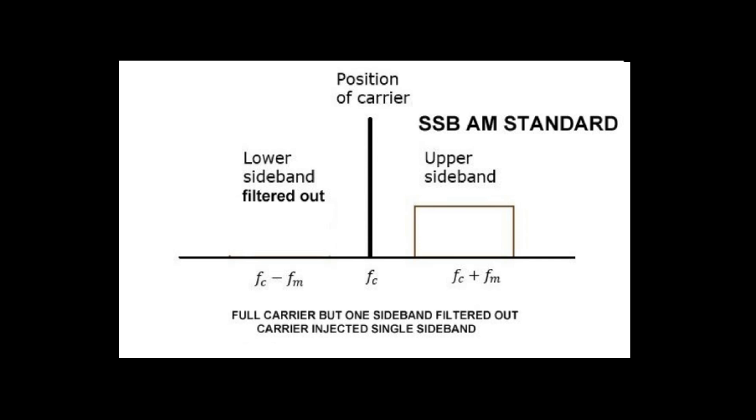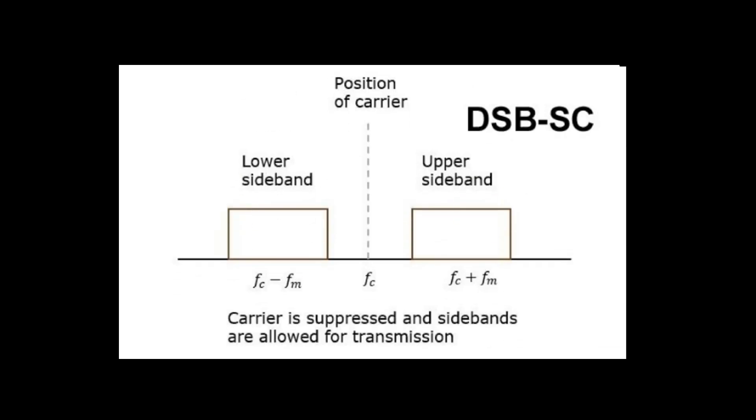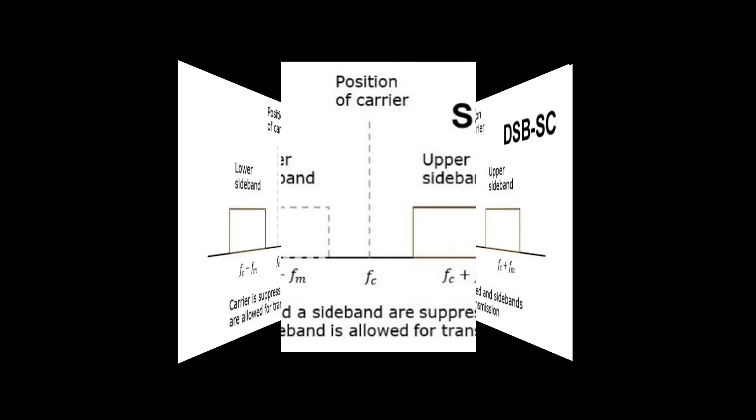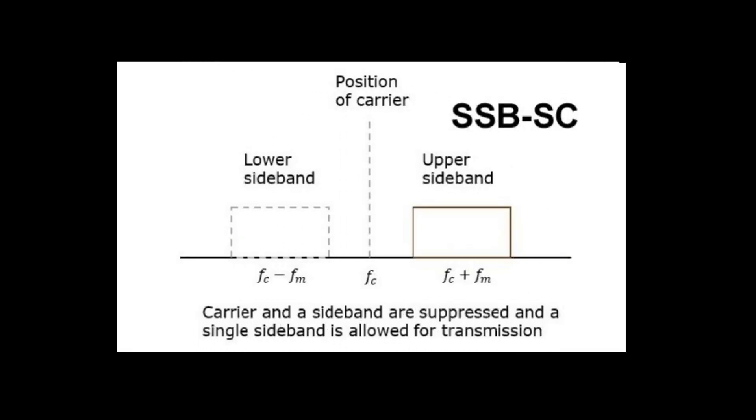Then we have double sideband. This is typically 50% efficient because we have no carrier at all. Finally, we have single sideband, which is using the same idea getting rid of the carrier, but it comes out to 100% efficiency because all of the power is devoted to one single sideband.